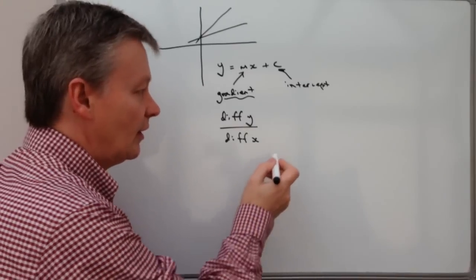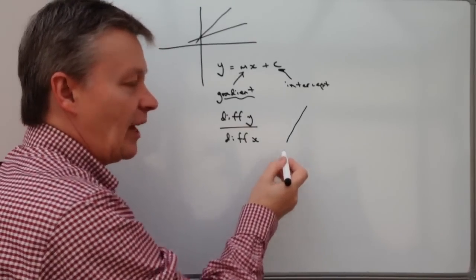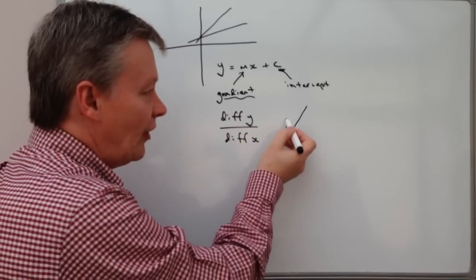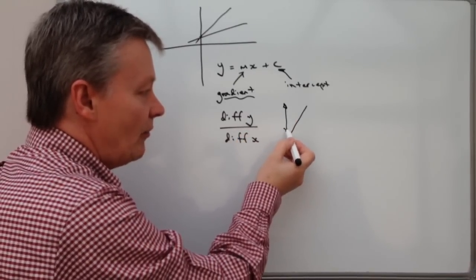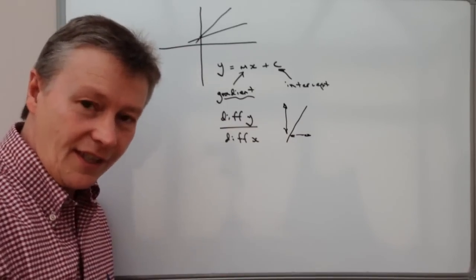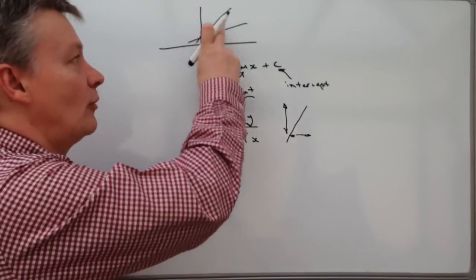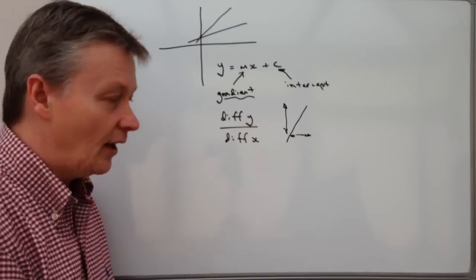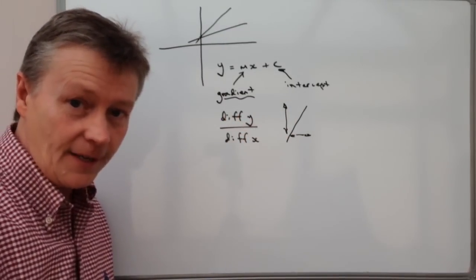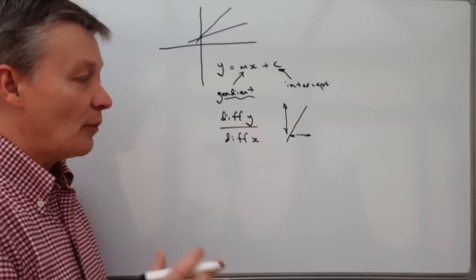So if you imagine that you're walking up a hill, what you're doing is you're describing how far you're actually going to go up that hill for how much distance you're going to go along. And that's exactly the way that we describe gradients on a straight line using difference in y divided by difference in x. So I'll give you a proper example.